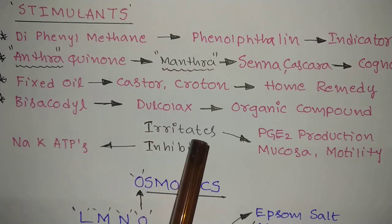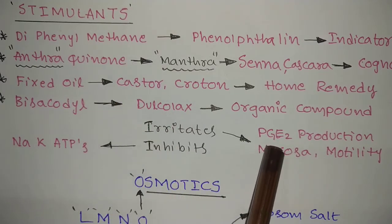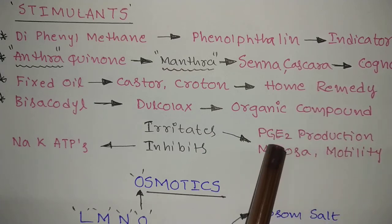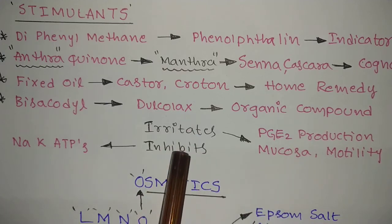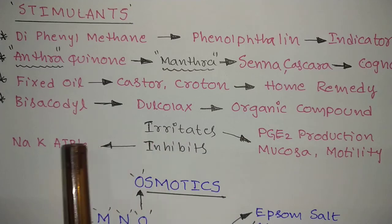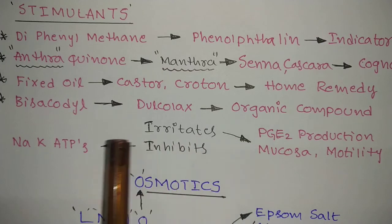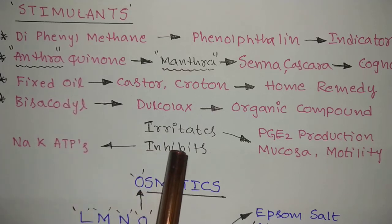The mechanism of stimulants: they irritate the intestinal mucosa, increasing prostaglandin PGE2 production and increasing bowel motility, causing the patient to feel the urge to go to the toilet. They also inhibit the sodium-potassium ATPase pump — this inhibition has appeared in many competitive examination question papers.